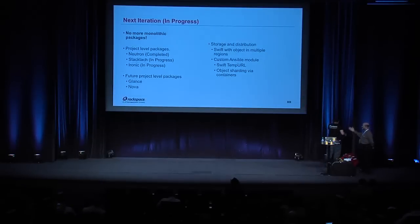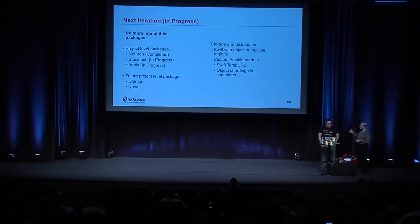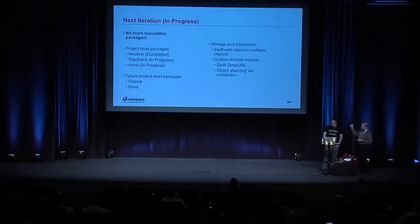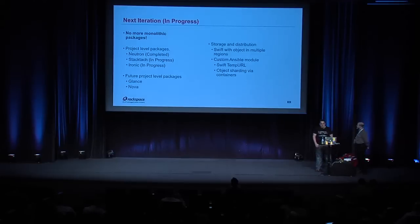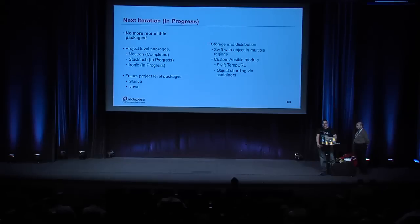So where are we going? We're getting rid of the monolithic package. We've already pulled Neutron out into its own separate package — a virtual environment and configuration, not part of the monster tarball. We're in the process of doing that for StackTac, Ironic, and eventually Glance and Nova. We're also moving to using Swift to store the objects, with custom Ansible modules to generate Swift temporary URLs, shard the artifacts across Swift containers, and pull packages down to each system — removing the one-cell-at-a-time restriction.